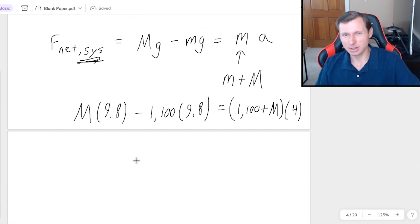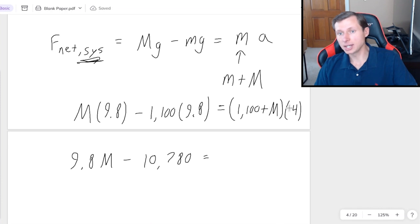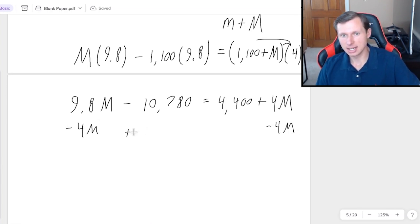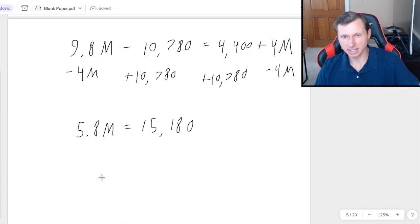So now let's see how good we are at algebra. It's going to be 9.8 M minus 10,780 equals, for the right side, I do need to distribute the 4 to both terms. So it's going to be 4,400 plus 4 M. And then how do we solve for M here? Hopefully you know. So now I need to subtract 4 M from both sides and add 10,780 to both sides. Because I'm getting all the M's on one side and all the other numbers on the other side. So that's going to be 5.8 M equals 15,180. And then finally, the last step is to divide by 5.8. So that counterweight needs to be 2,617 kilograms, which is massive.